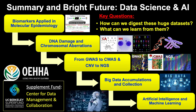Here is the summary and our bright future. Many genotoxicity biomarkers have been applied in human studies at both DNA and chromosome levels — from historical methods to current ones, and from single assays to high-throughput array or omics-based analyses like GWAS, CWS, and next-generation sequencing. We have collected numerous data sets — we've learned about each one — but the key question is: how can we digest all this data together, and what can we learn from it?